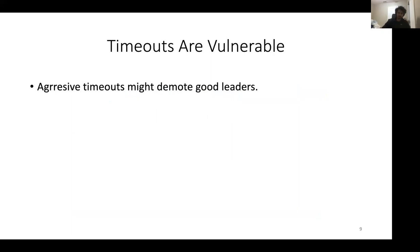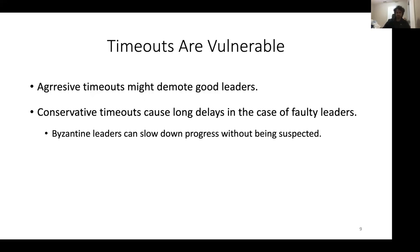Unfortunately, timeouts are vulnerable due to several reasons. If our timeouts are too aggressive — too close to the real network delay — even small fluctuations in the delays might demote good leaders. We might timeout leaders even though they are good, just because they are slightly slower than our timeouts. On the other end, if we set conservative timeouts, it can cause serious delays in case the leader is actually faulty, because we will need to wait through the entire timeout until we can switch to the next view.